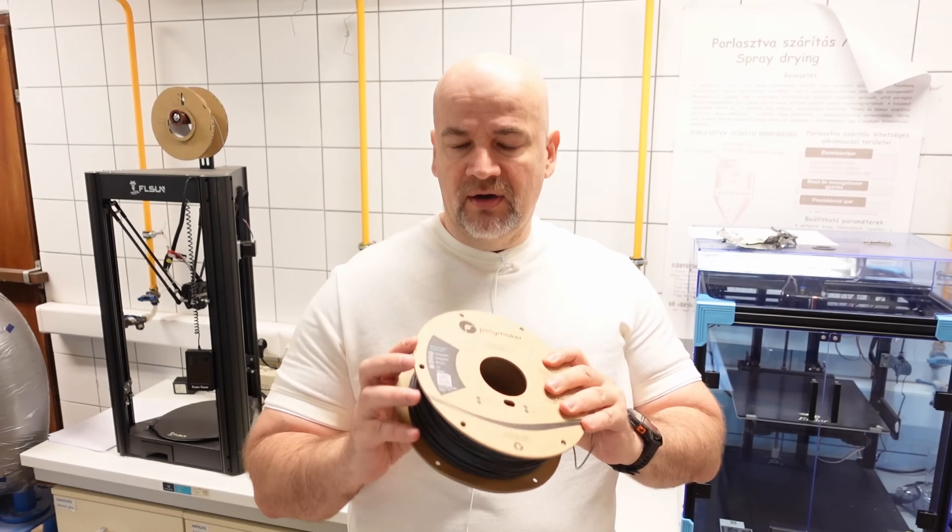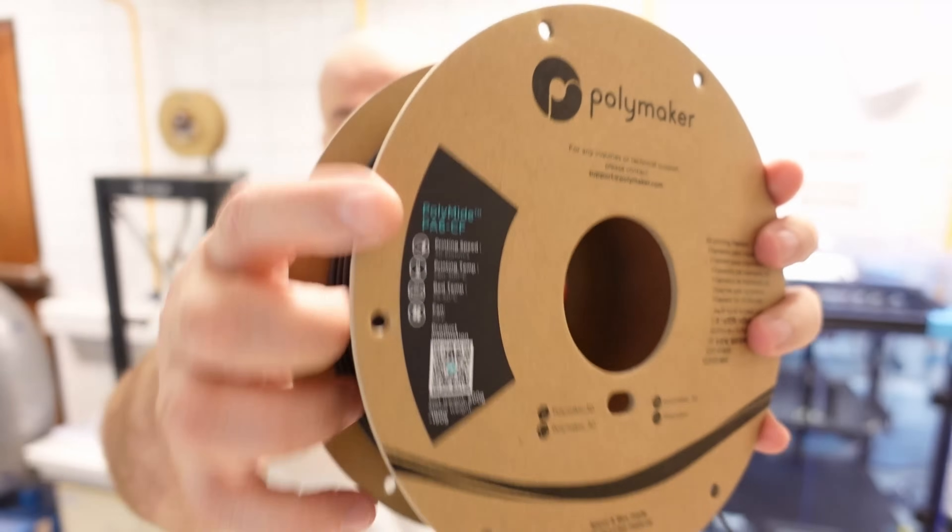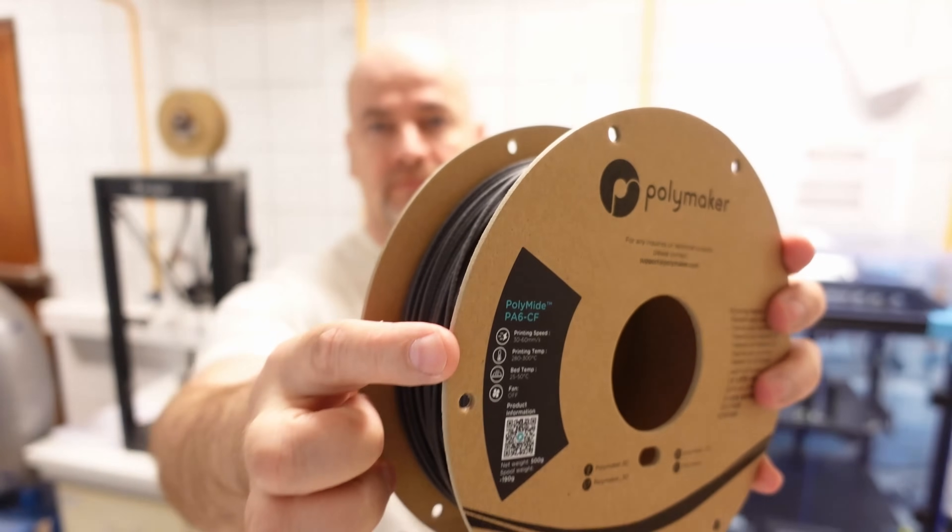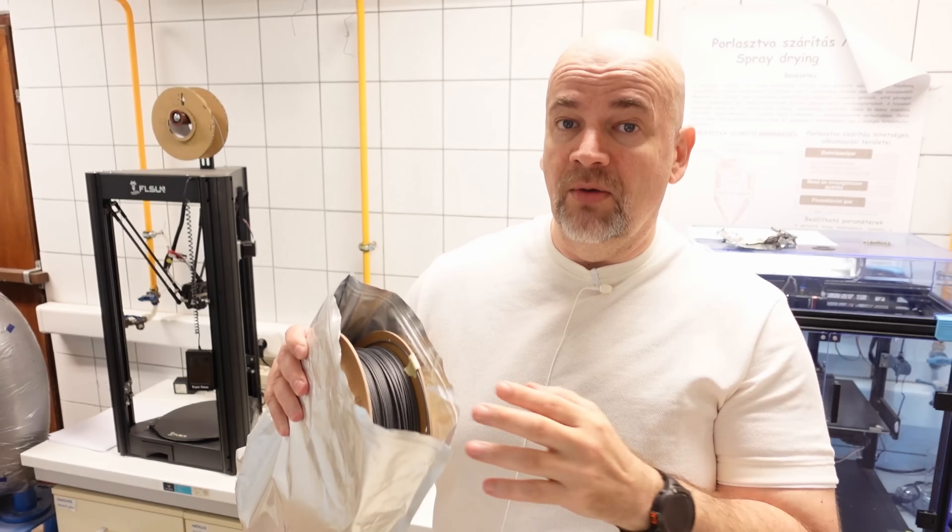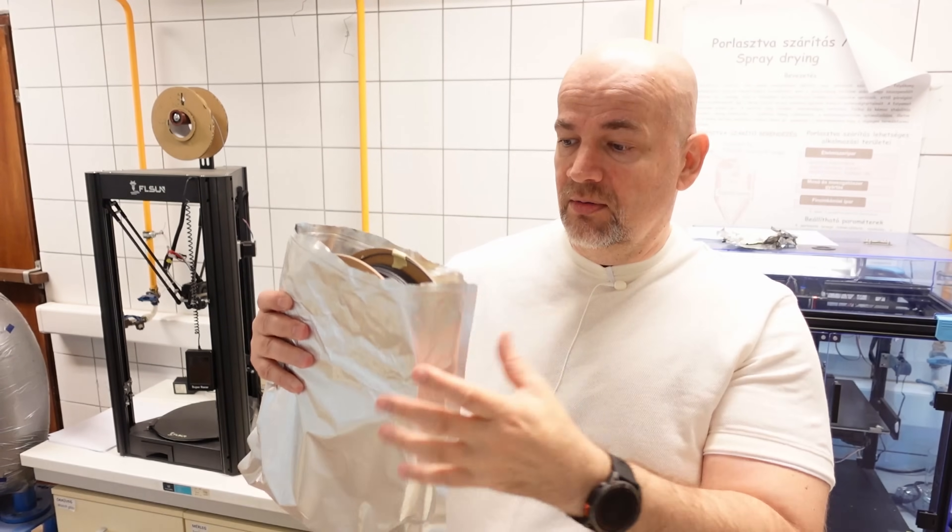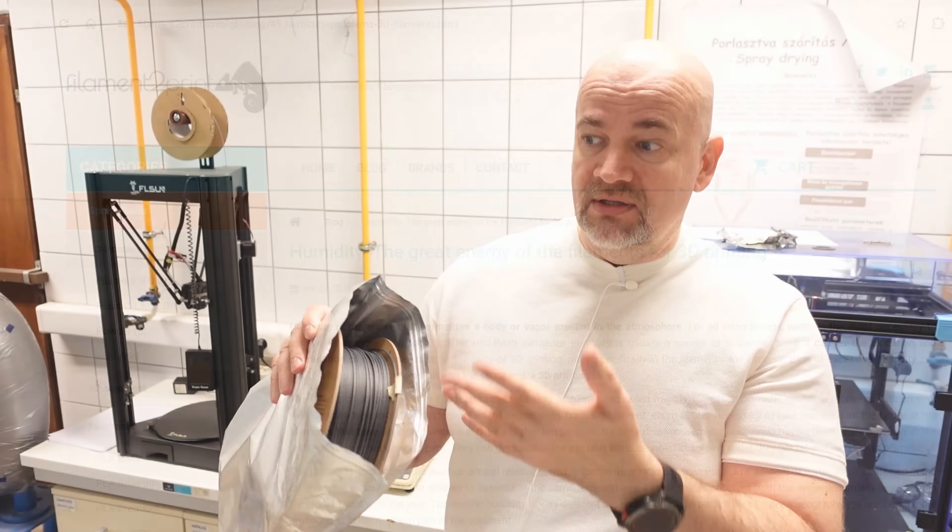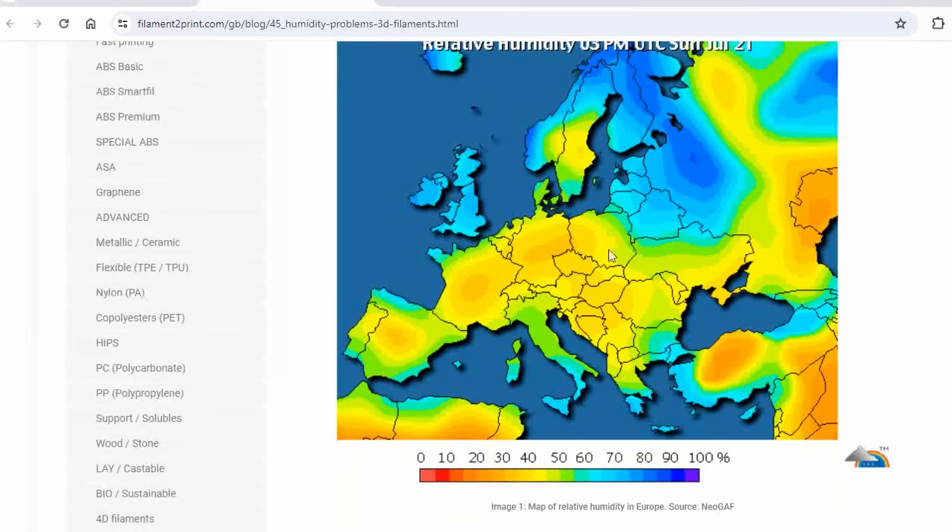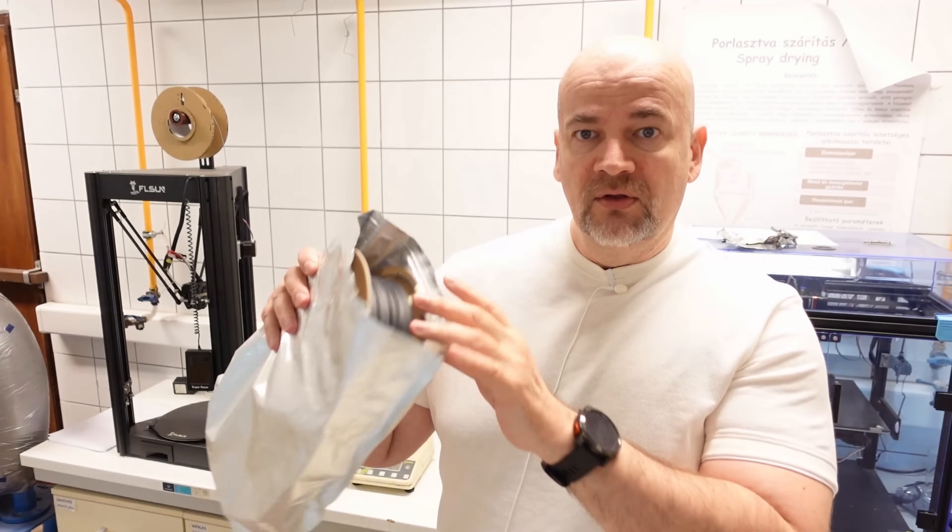So in this video, in this testing, I'm using the Polymaker PA6CF, the carbon fiber version. This is more than one year old filament and I store it in this resealable bag with some desiccant inside. And actually, this storing method is quite good for me because I don't live near the ocean. And I will show you how much moisture it absorbs during the one year storing with this method.